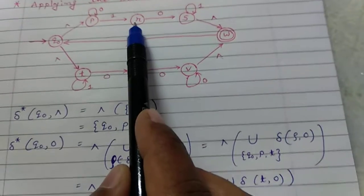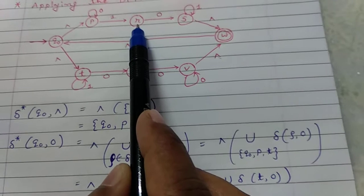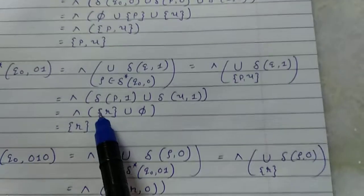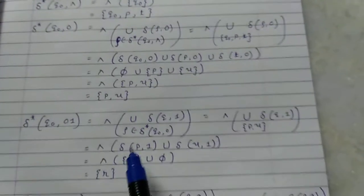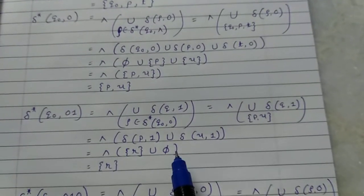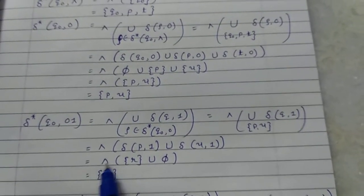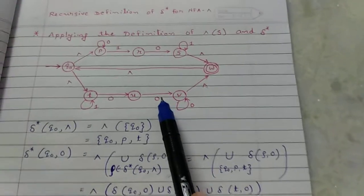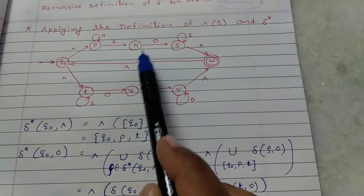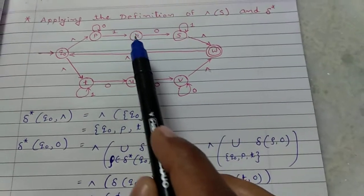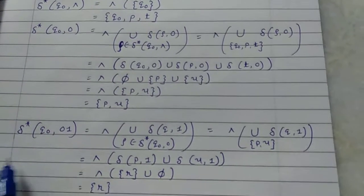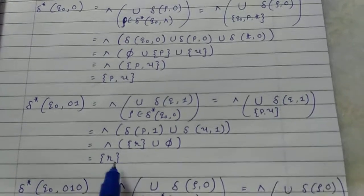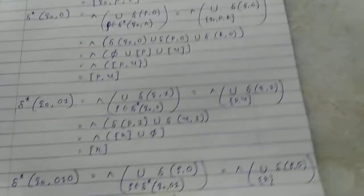From P on input 1 we reach state R. From U on input 1 there is nothing, so that is empty. Find epsilon closure of R: from R there are no epsilon transitions, so epsilon closure of R is just {R}. Therefore delta star of Q0 on input 01 is equal to {R}.